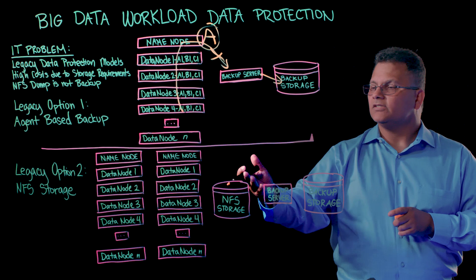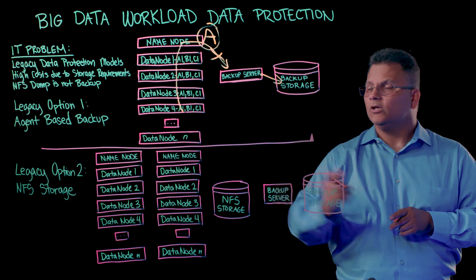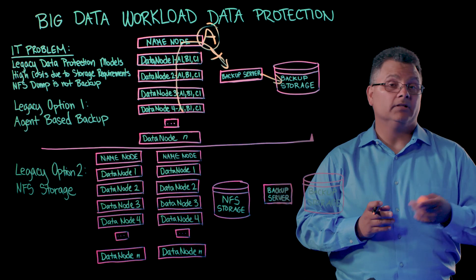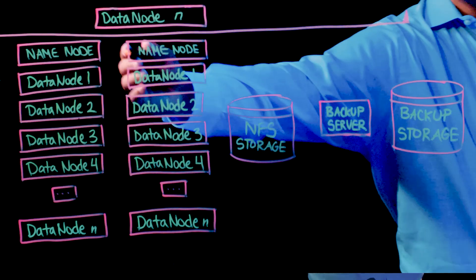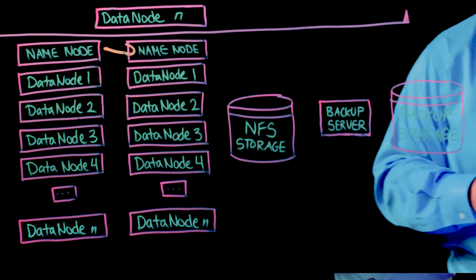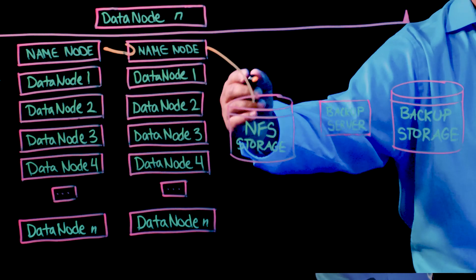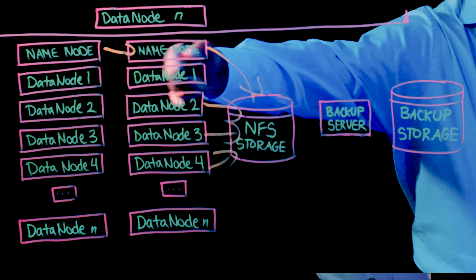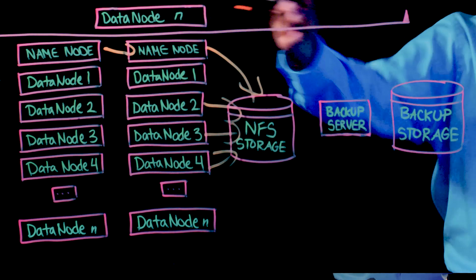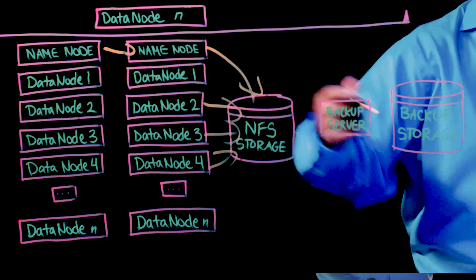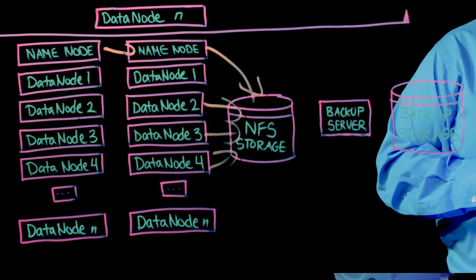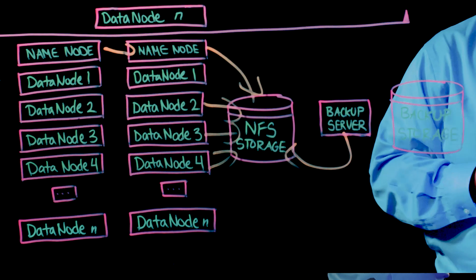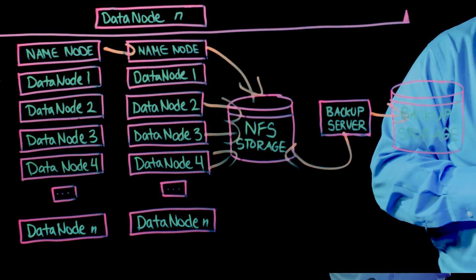Let's look at the second option. In this environment, you've got a Hadoop cluster which happens to have a clustered pair, and commonly that is used for high availability reasons. In this case, they'll be moving data between the boxes, and then what they'd like to do is do an NFS dump to some NFS storage. Keep in mind, if your Hadoop cluster is a petabyte of data, you need a petabyte of NFS storage. The backup server will then come along and do a mount and backup that data and move that to the backup storage.